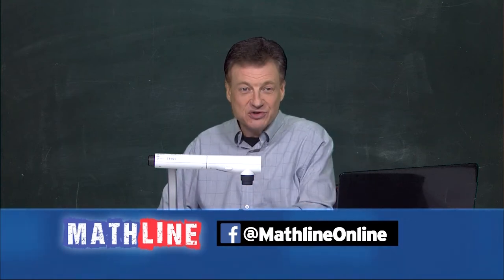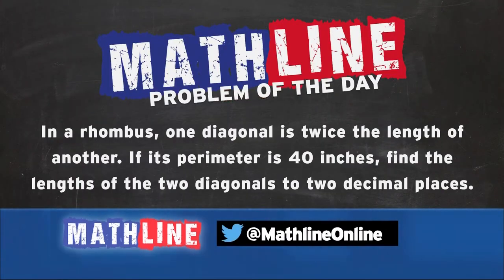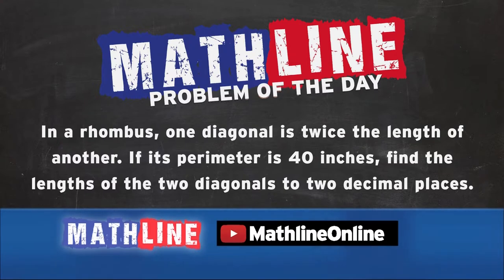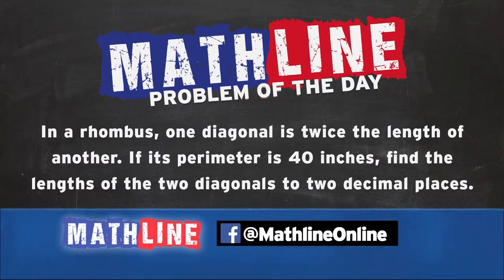Now, let's go to Tuesday. See what Tuesday brought for us. My goodness, in a rhombus, one diagonal is twice the length of another. Boy, did I make a long problem or what for this day? If its perimeter is 40 inches, find the lengths of the two diagonals to two decimal places. Let's see what we're going to do on this problem.